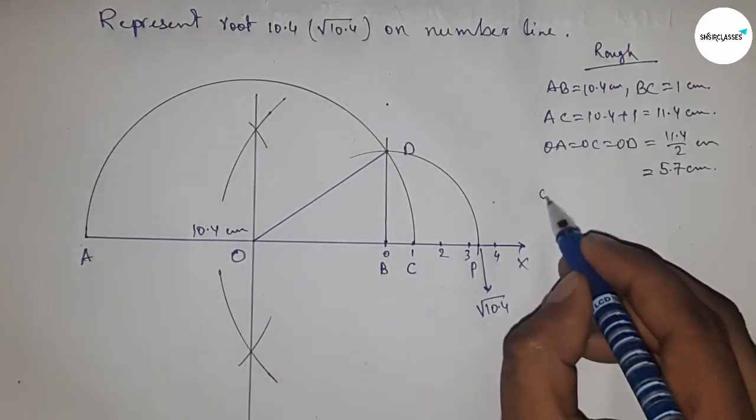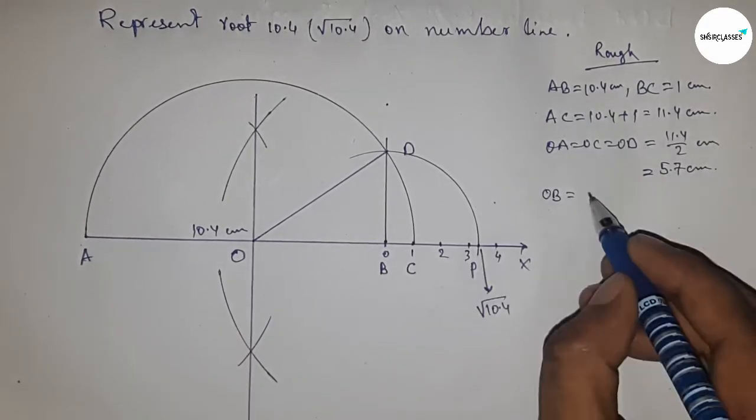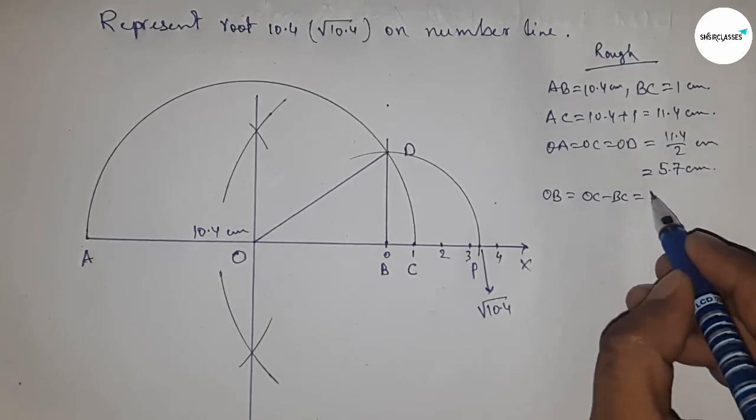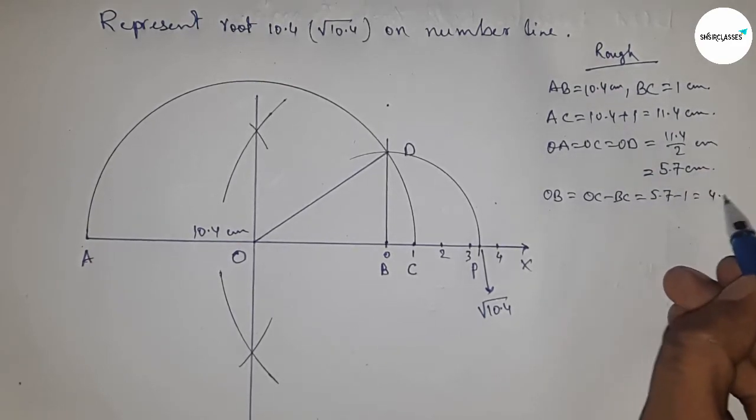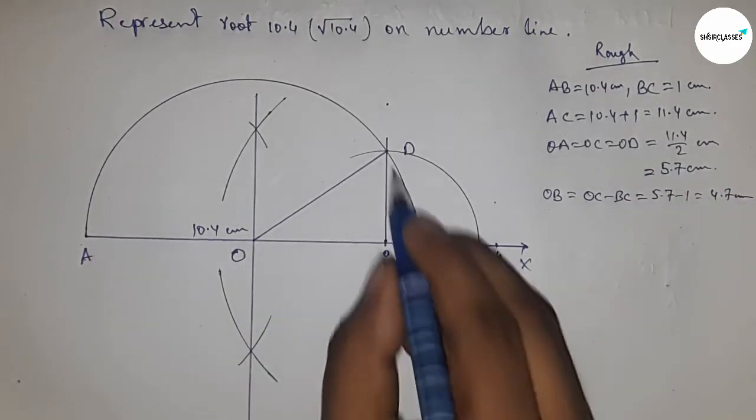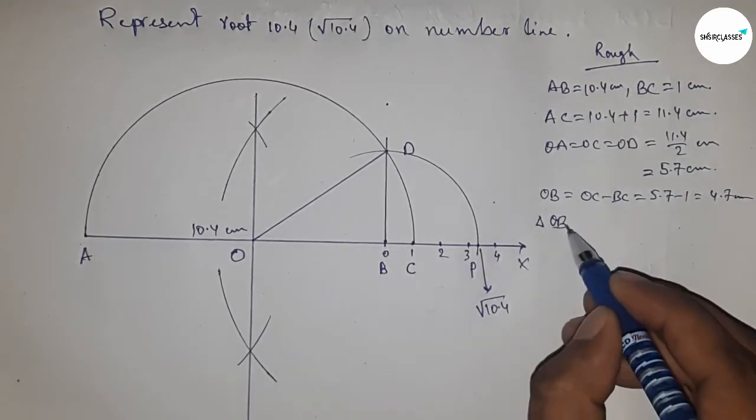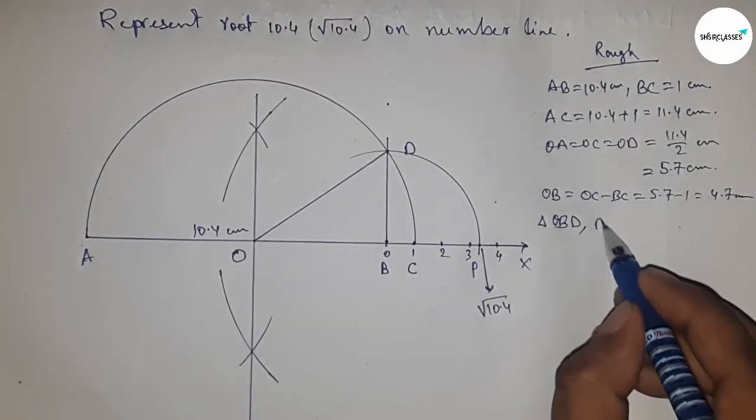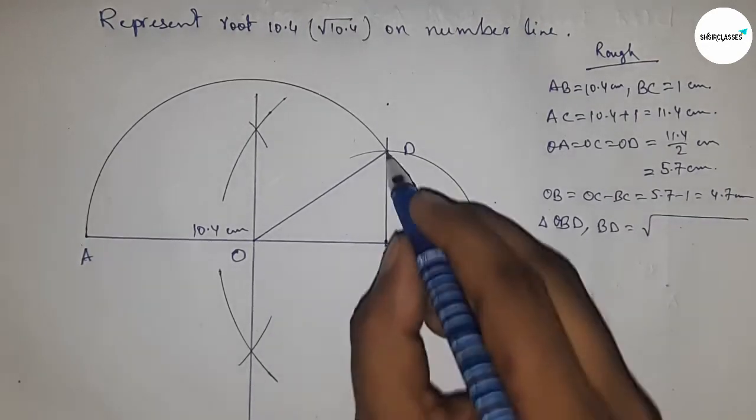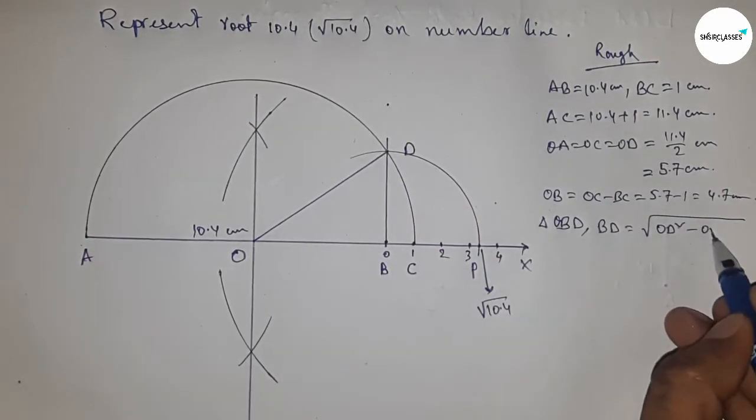Distance OB equals OC minus BC. Putting the values of OC and BC, this is 4.7. Now from right angle triangle OBD, we can write BD equals, by Pythagorean theorem, OD square minus OB square.